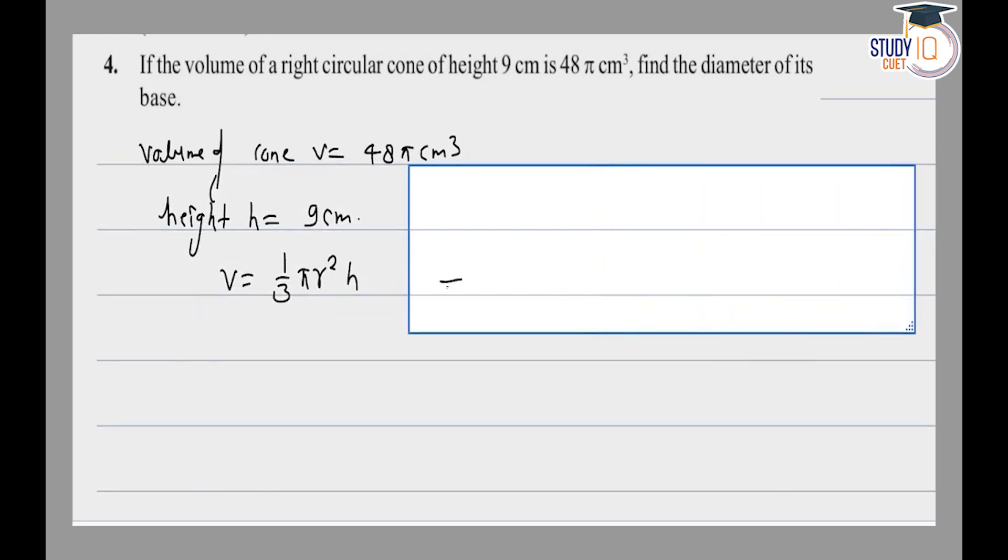This is going to be 48π = 1/3 × 22/7 × r² × 9, so the π cancels.